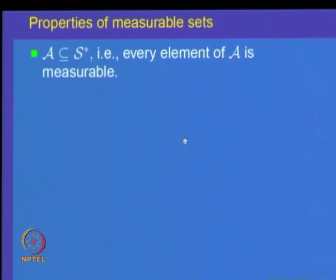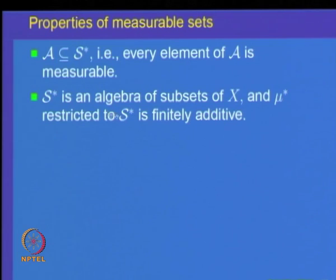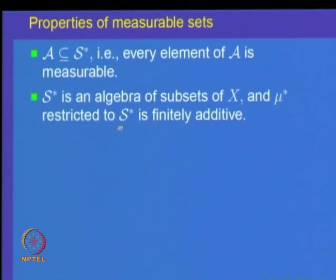The first observation proved last time: A is the given algebra on which the measure is defined, and every element in the algebra is also a measurable set, so A ⊆ S*. The second property: S* is an algebra of subsets of X, and μ* restricted to S* is finitely additive. We already observed that E is measurable if and only if its complement is measurable, so S* is closed under complements. It remains to verify closure under unions.